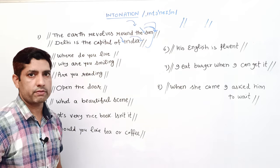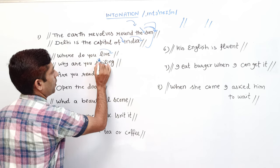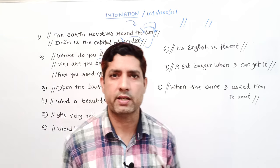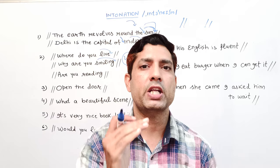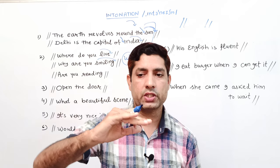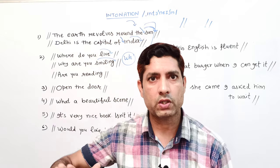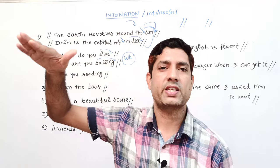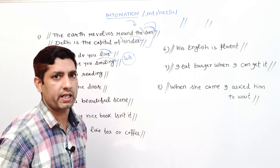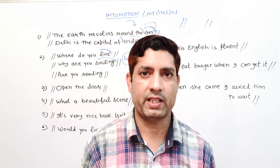'Where do you live?' — falling intonation. 'Why are you smiling?' — falling intonation. यानी WH-questions में falling tone रहती है। Interrogative sentences दो type के होते हैं: WH-type और yes/no answer type। WH-questions में pitch falling रहती है। चार तरह की tones होती हैं: rising tone, falling tone, rising-falling, और falling-rising।